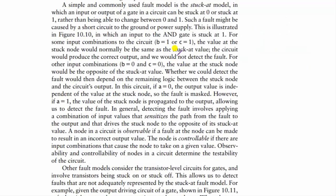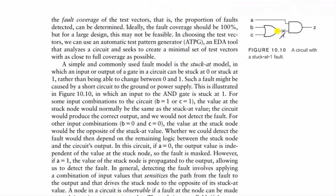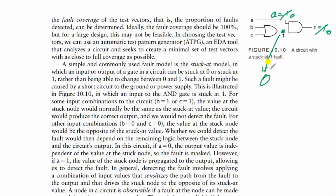In the case of fault models, you need to talk about stuck-at-1 and stuck-at-0. For example, if this point is stuck at 1, whenever A equals 1, Z equals 1; whenever A equals 0, Z equals 0. Z is not a function of B and C — it is defined as stuck-at-1. If this point could have been stuck at 0, then in each and every iteration of A, B, C, Z would have retained the 0 state. How you are going to identify this is a big question.